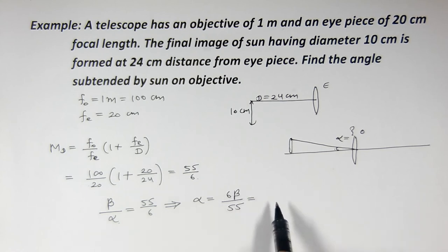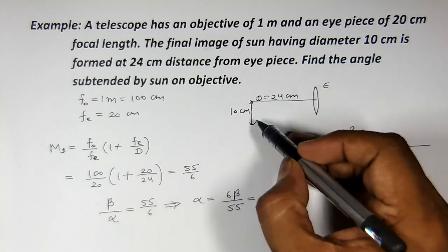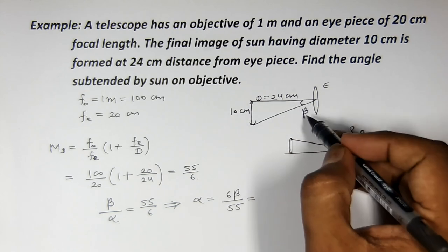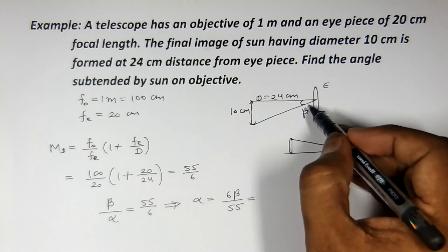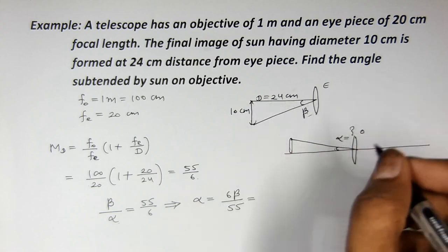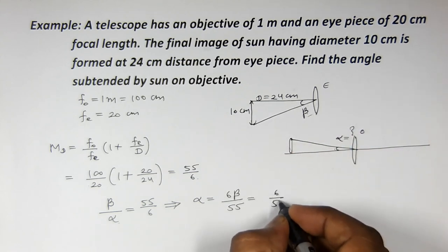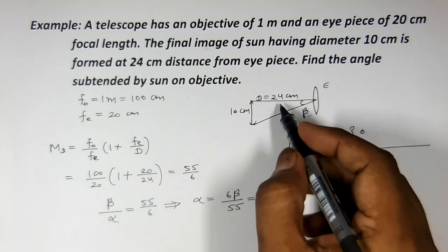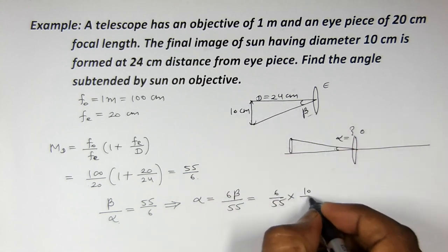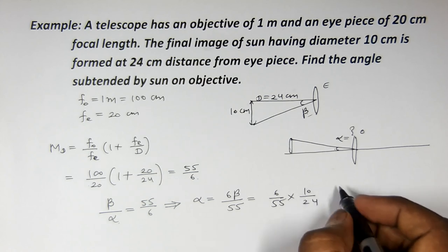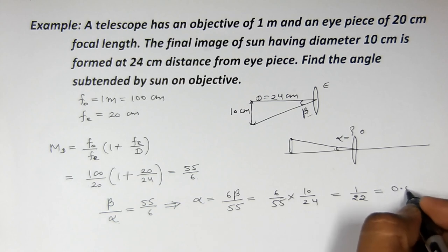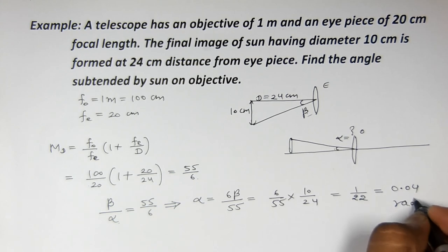Now beta is the angle which the final image makes at the eye-piece. We can calculate beta from this triangle as perpendicular upon base, so beta = 10 upon 24. Therefore alpha = (6 upon 55) into (10 upon 24). If we solve this, it will be 1 upon 22, which is almost 0.04 radian. This will be our answer.